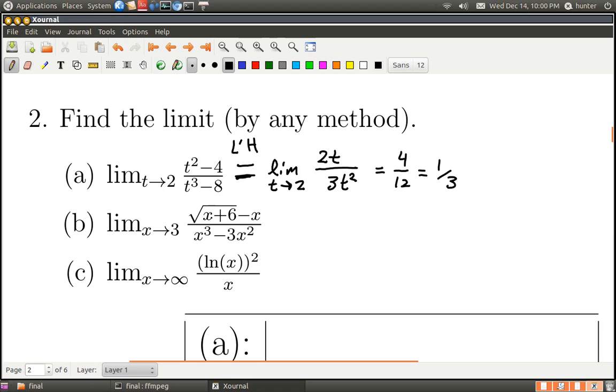What happens if you plug in three? I'll leave it to you to figure out that you get zero over zero. So I can use L'Hopital's rule, and I shall. So what happens when you use L'Hopital's rule? The derivative on top is one-half x plus six to the minus one-half, minus one, and this is divided by three x squared minus six x.